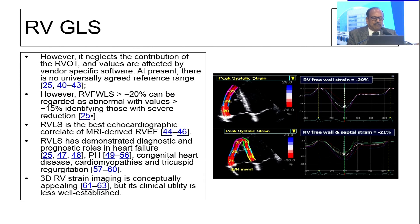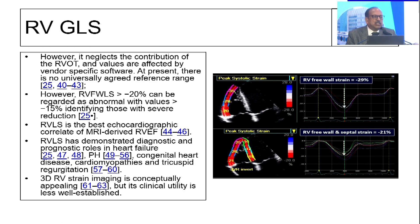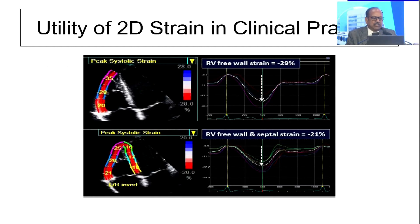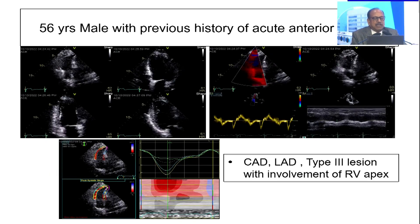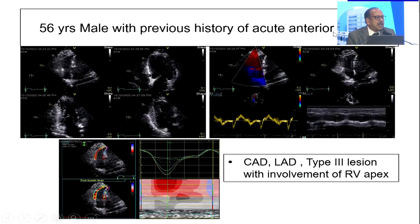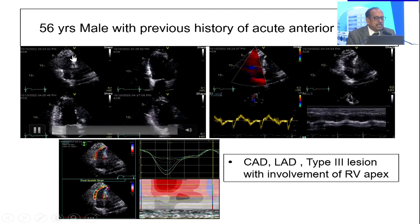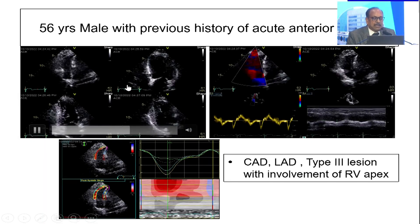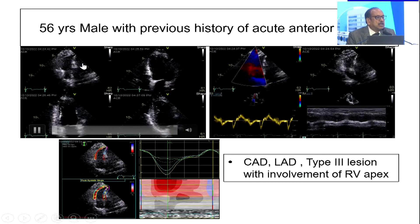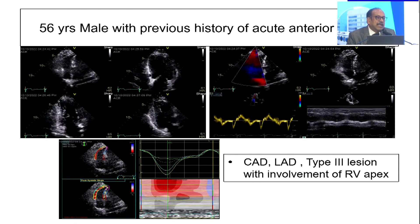We look forward for RV free wall GLS or a global GLS. Anything more than minus 20 is considered a very good value for GLS. One word about clinical utility — utilized during our COVID period: here is a 56-year-old male with a previous history of acute inferoposterior MI. The apical GLS of RV strain was reduced compared to mid and basal — this was truly a person who had a type 3 LAD lesion, and that gave us great diagnostic value.